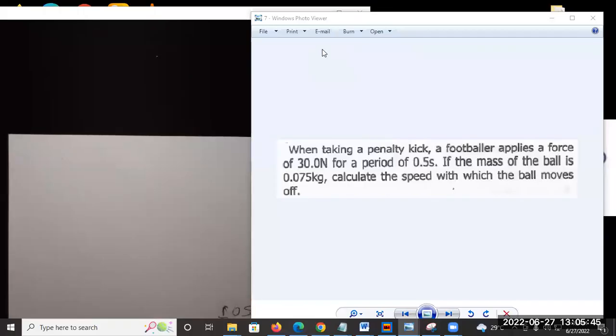When taking a penalty kick, a footballer applies a force of 30 newtons for a period of 0.5 seconds. If the mass of the ball is 0.075 kilograms, calculate the speed with which the ball moves off.